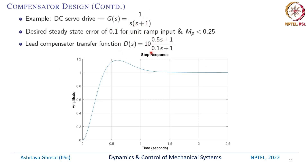The step input response settles down very close to 1 and does not overshoot more than 0.2, which satisfies the requirement of less than 0.25. The steady state error is also much less than 0.1. Our design — the lead compensator D(s) = 10·(0.5s + 1)/(0.1s + 1) — satisfies the requirements of steady state error less than 0.1 and peak overshoot less than 0.25.